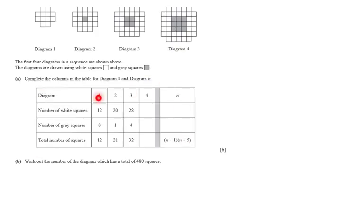Complete the columns in the table for diagram four and diagram n. Indeed, there is some sort of table here. Diagram one, two, and three relating to these three diagrams, and then they say the number of white squares, gray squares, and then the total number of squares. This is for diagram four, so for that one, and then we're going to do it for the nth diagram.